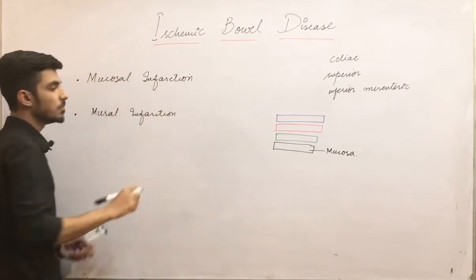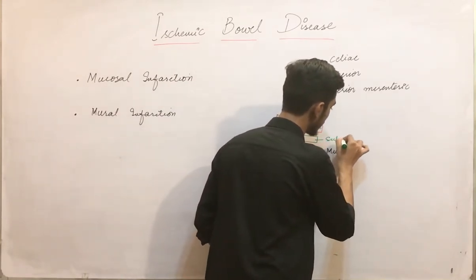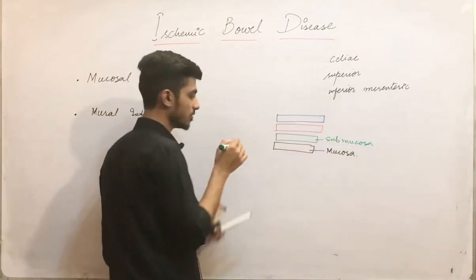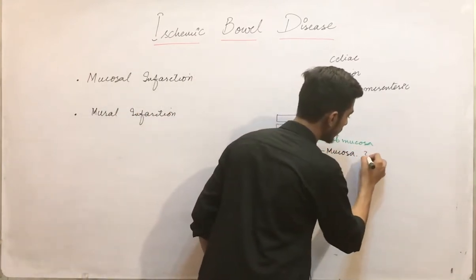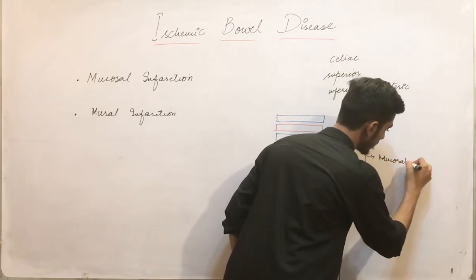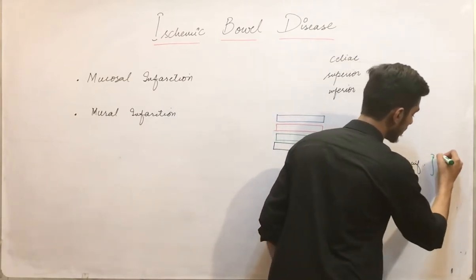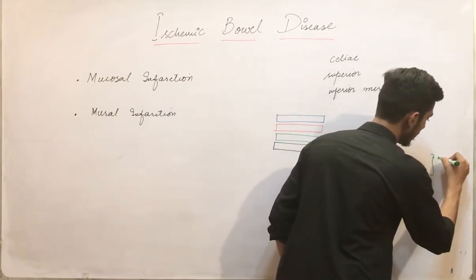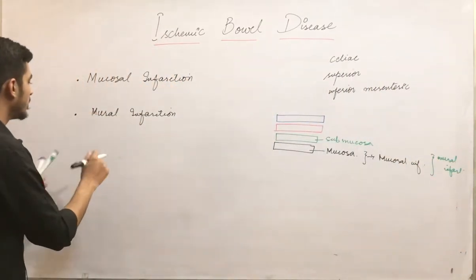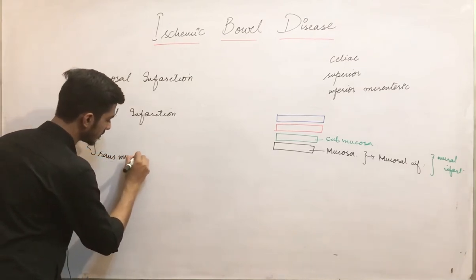Mural infarction involves two layers — the mucosa as well as the submucosa. So if the mucosa alone is involved it is mucosal infarction, but if both the mucosa and submucosa are involved, that is called mural infarction.